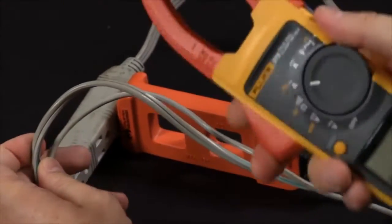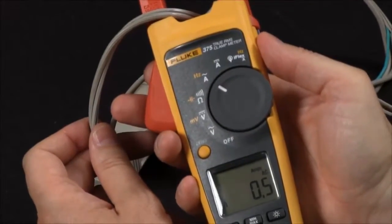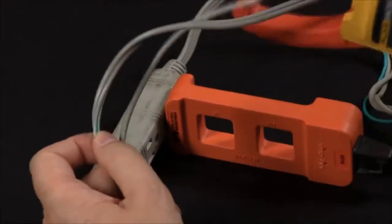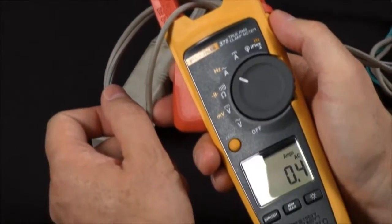However, if I split the cords, it doesn't matter which side I measure. I'm now measuring about half an amp, or if I measure on the other conductor, we'll have the same result, measuring about a half an amp.